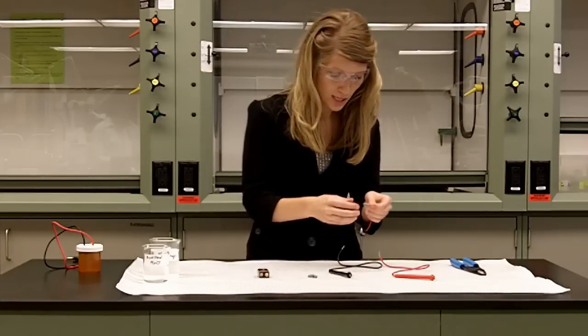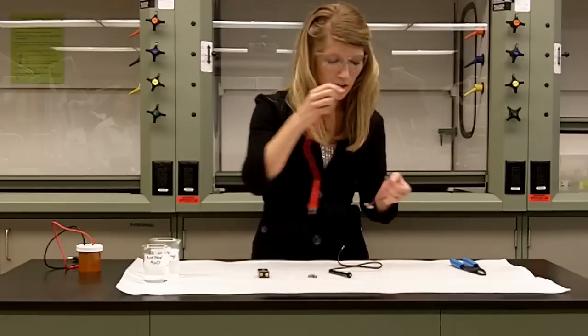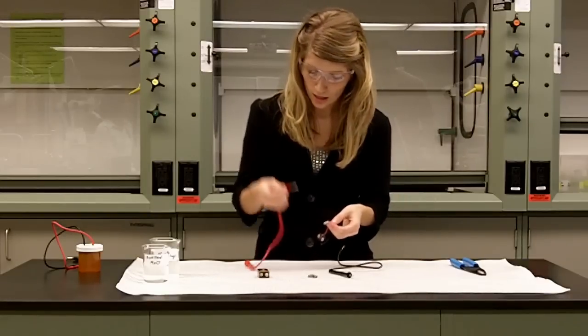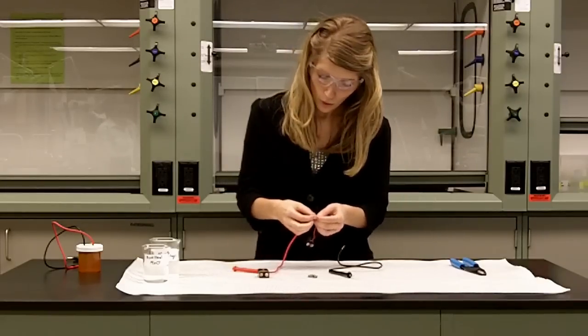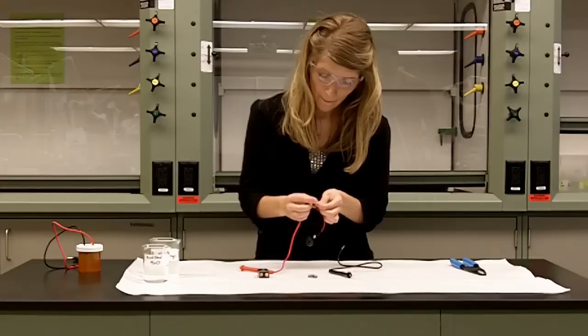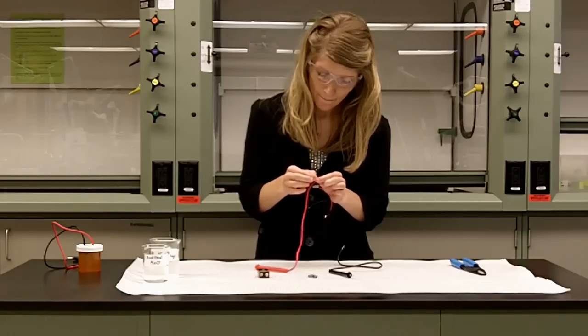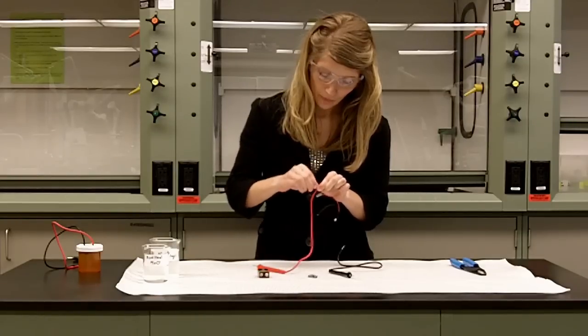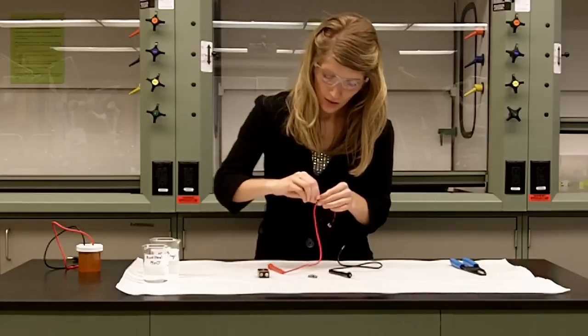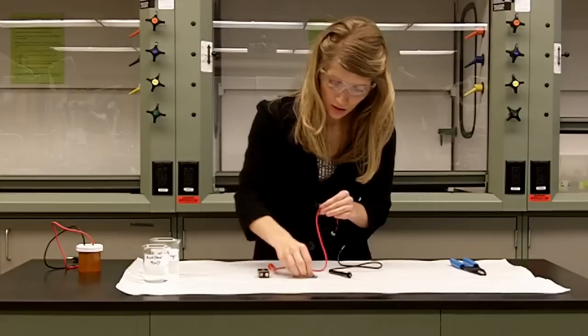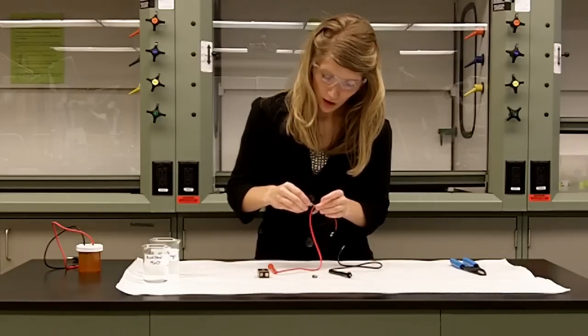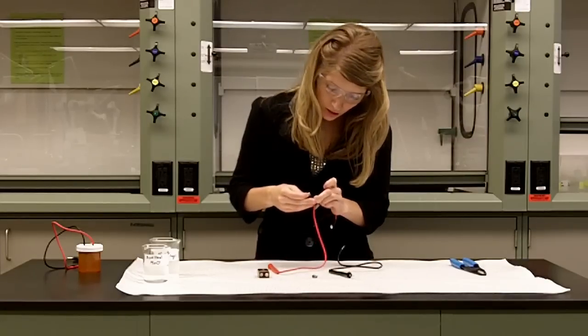And then, you want to take the other side of the LED and twist the red probe around it. And then, again, place the wire nut over top of it just to make sure the connection's good.